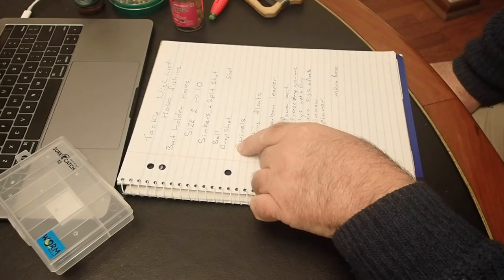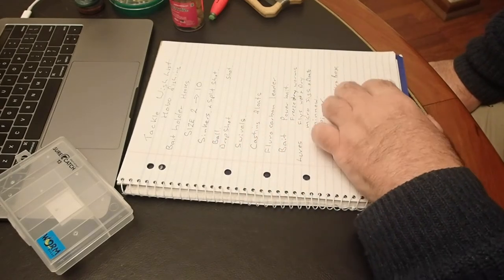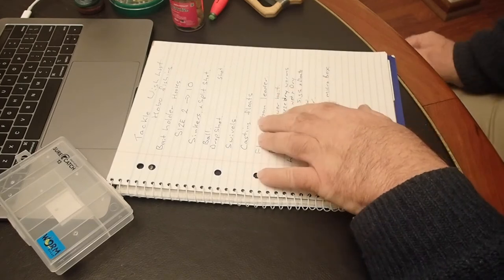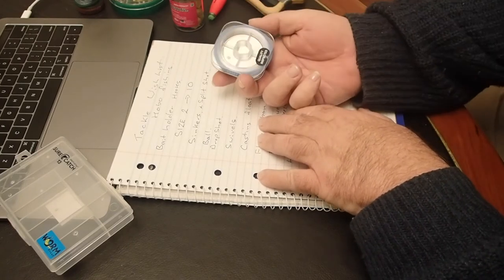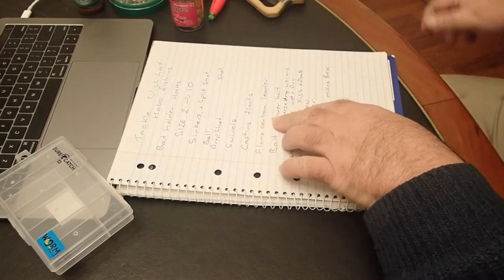For joining fluorocarbon to line I can do it with knots. That's the casting float, so fluorocarbon leader, I've got some, so that's an option.